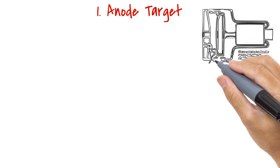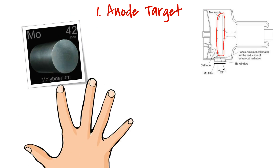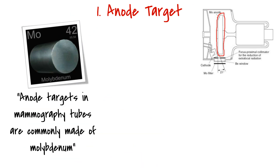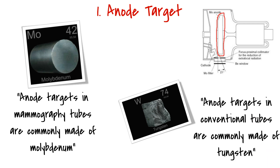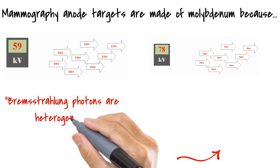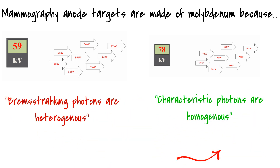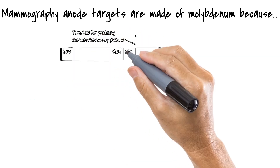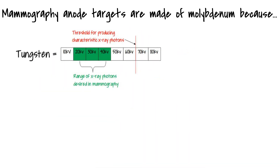Let's start with the anode target. In mammography tubes, the anode target is commonly made of molybdenum, unlike in conventional tubes where anode targets are most commonly made of tungsten. In our video on X-ray production, we learnt about Bremsstrahlung and characteristic X-ray photons. While Bremsstrahlung photons vary in their kilovoltage, characteristic X-ray photons are uniform in kilovoltage and have a narrow spectrum. With tungsten, at least 70 kilovolts is required to produce characteristic photons. Since mammography is always working far below 70 kilovolts, if tungsten targets were used, characteristic X-ray photons would never be produced.